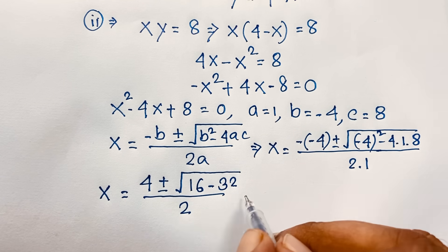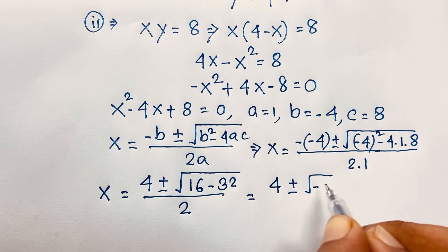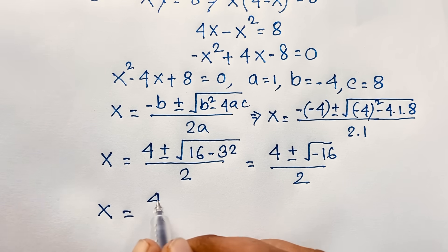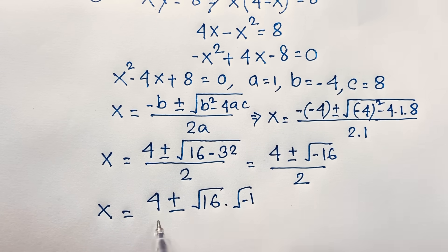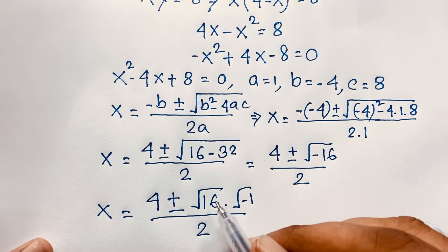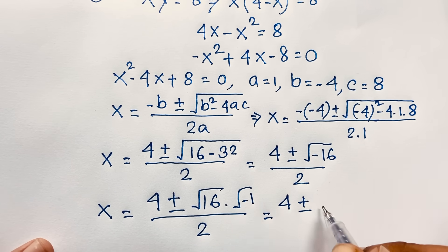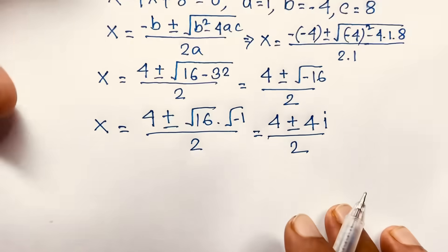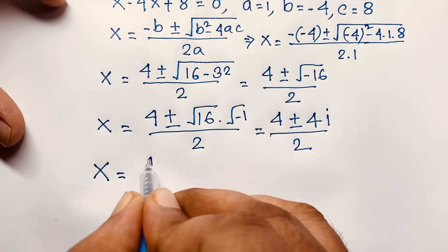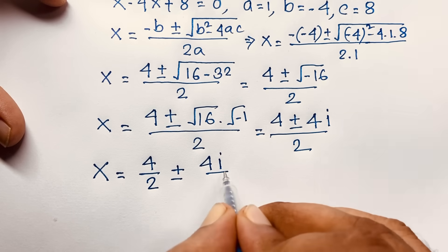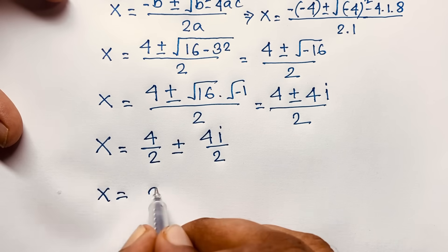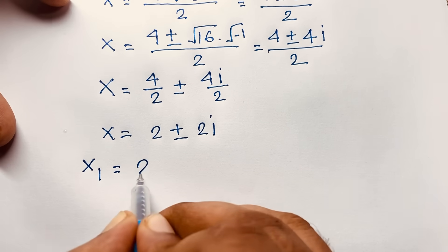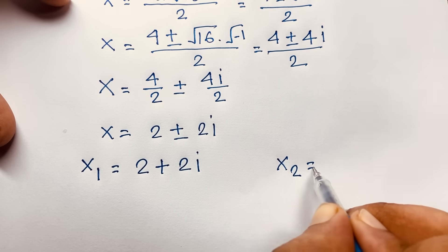2 times 1 is 2. So it becomes 4 plus or minus square root of 16 minus 32 over 2, which gives 4 plus or minus square root of negative 16 over 2. Now, square root of negative 16 equals square root of 16 times square root of negative 1, which is 4i. So x equals 4 plus or minus 4i, all over 2, which simplifies to 2 plus or minus 2i. Our two solutions are x₁ equals 2 plus 2i, and x₂ equals 2 minus 2i.